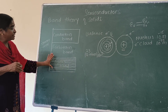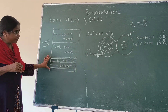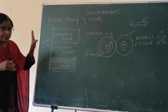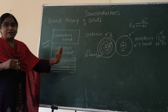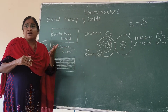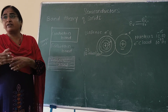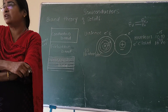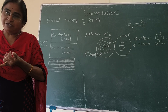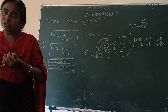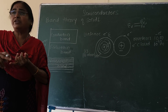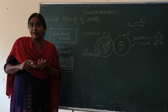The valence band can be completely filled, half filled, or partially filled, depending upon the number of valence electrons. The properties of materials are defined in terms of their electrical conductivity. Materials have different properties like electrical conductivity, mechanical properties, thermal properties and so on.